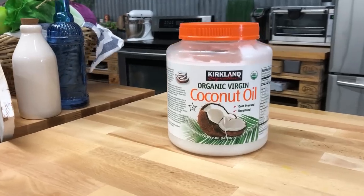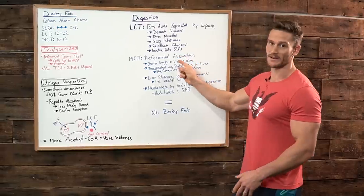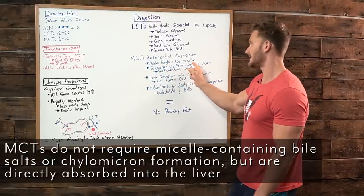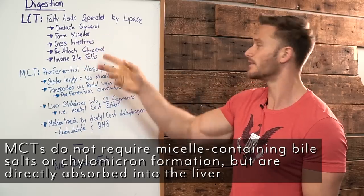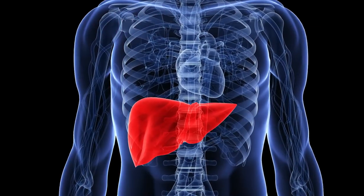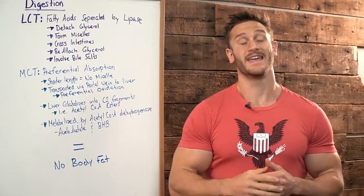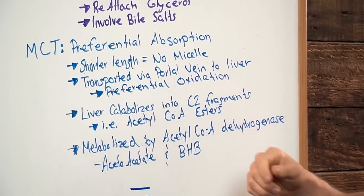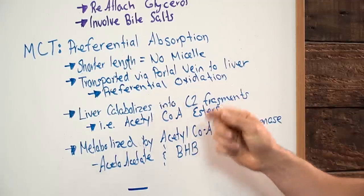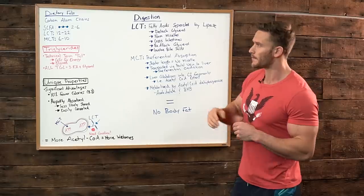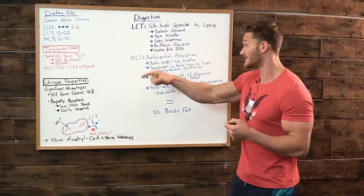Now let's look at the MCTs and how those are digested. They get preferential absorption. They get the absolute first-class treatment. Because of their shorter length they don't need a micelle. They don't need to get converted into a micelle. They're transported directly from the portal vein into the liver where they get preferential oxidation. So again they get the VIP pass all the time. These MCTs because they're shorter and easier to break down go straight to the liver where they're oxidized for fuel. Then what happens inside the liver is actually really cool because here's where it gets interesting. The liver now catabolizes these MCTs into shorter carbon chains. Remember how I mentioned the shorter the carbon chain the easier to digest?